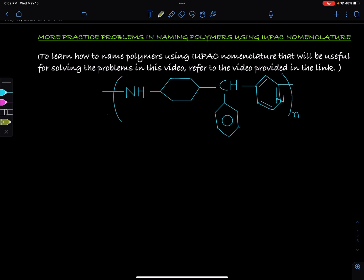To write the IUPAC name we want to make sure that the groups are in the right order, which means moving from left to right, the group that has the highest priority should be on the leftmost. In this case pyridine has the highest priority because heterocyclic rings get the highest priority. So if we put the pyridine ring on the leftmost, then there are two options: we can put the imino group next because that follows the pyridine ring on the right side, or we can put the phenylmethylene group because that follows the pyridine ring on the left side.